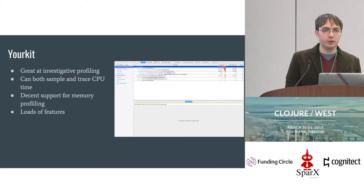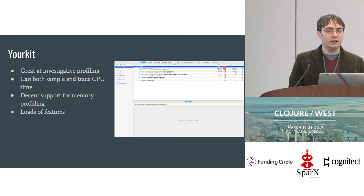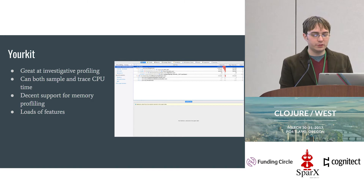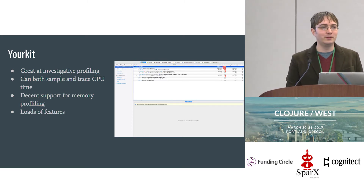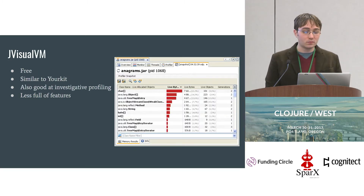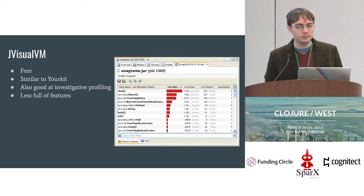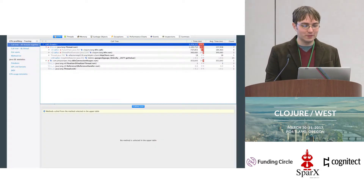One of the tools I used in this project was YourKit. It's great at this sort of investigative profiling. It has a ton of features — it can do sampling and tracing of CPUs. It has a great amount of stuff it tries to figure out for you, which Clojure can throw some wrenches into. It has decent support for memory profiling, though not great because it runs in the JVM — if you run the JVM out of memory, you can't get a memory dump. But for CPU profiling, it's great. Another alternative is JVisualVM. It's pretty similar to YourKit — the same basic idea — and it's free; it comes with the JDK. It's also good at investigative profiling, but it has fewer features. It can work if free is important.